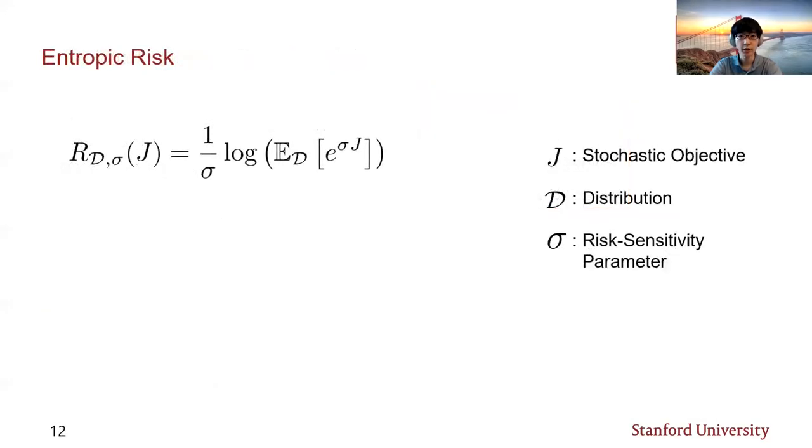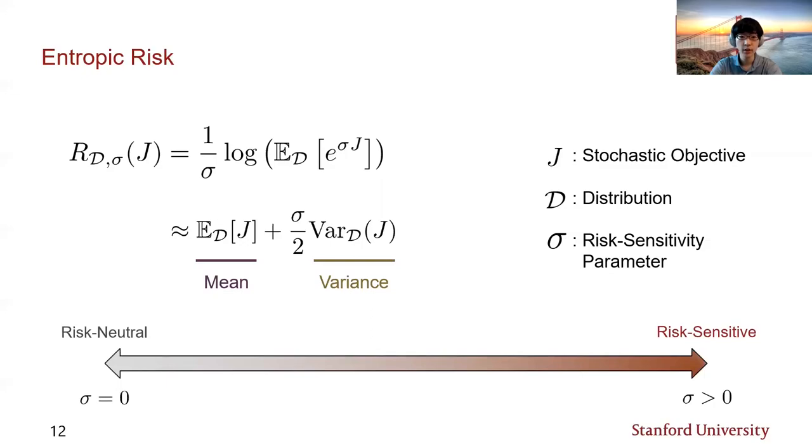The entropic risk measure, also known as exponential density utility, has been extensively studied in both the economics and the controls literature since the 1970s. This risk measure applies the exponential transformation to the objective with a user-specified scalar parameter sigma. Taylor-expanding the risk measure, one can show that it approximately decouples the mean and the variance when sigma is a small value. From this, we can tell that the risk sensitivity parameter sigma determines how much we care about the variability of the stochastic objective in addition to the mean. In this formulation, a larger sigma value increases the risk sensitivity, while the usual risk-neutral objective is recovered as sigma approaches zero.